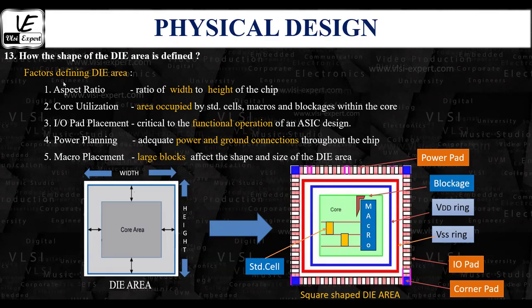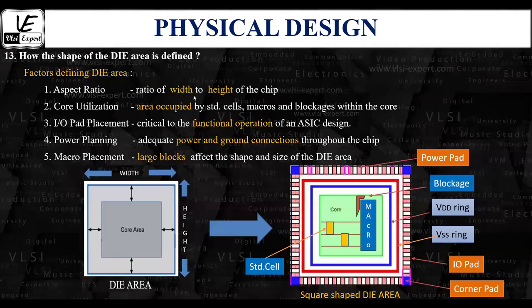The key considerations that define the die area are: aspect ratio, core utilization, IO pad placement, power planning, and macro placement. Aspect ratio is the ratio of width to height of the chip. It determines the shape of the chip — whether it will be a square, rectangular, or rectilinear shaped die area.